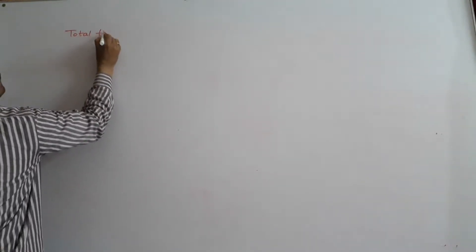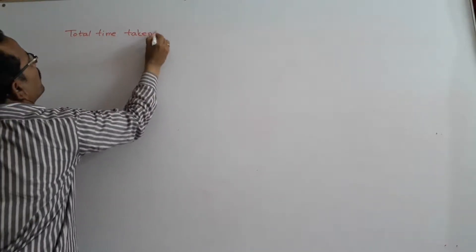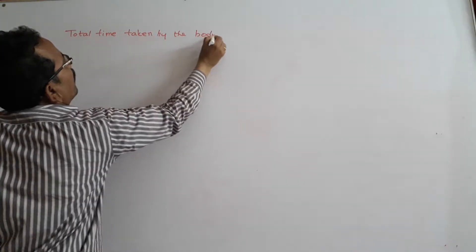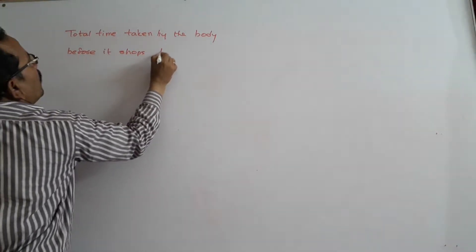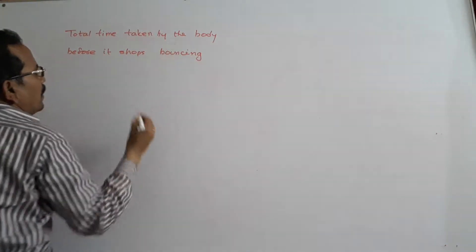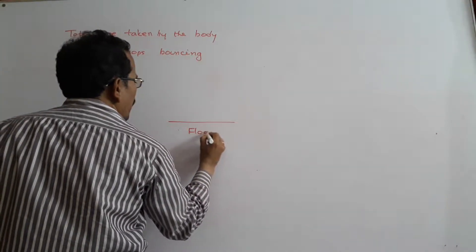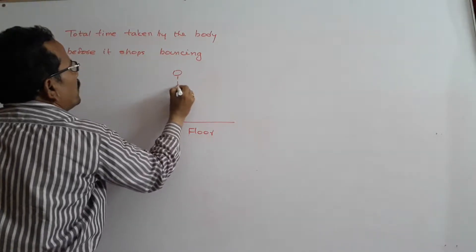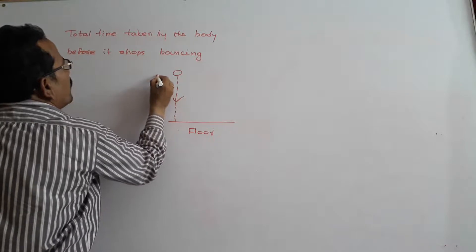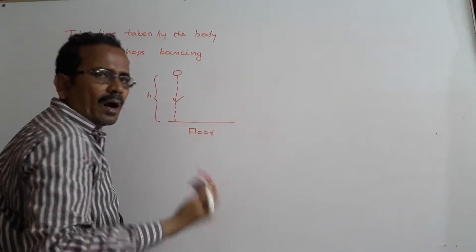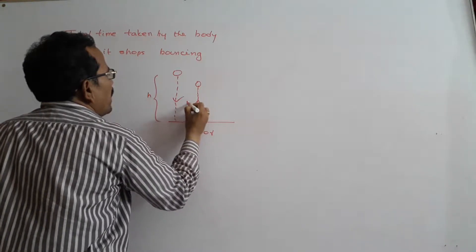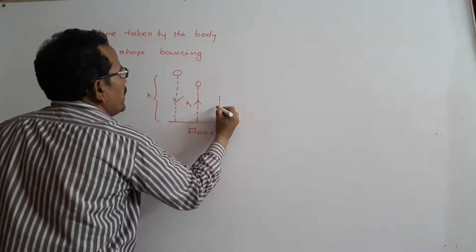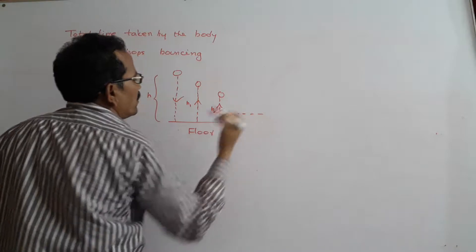This is a smooth floor on which a ball is dropped. The ball is dropped from a height H. After the first collision, it rebounds to a height H1. After the second collision, it rebounds to a height H2, and so on. We need to find the total time taken by the body before it stops bouncing.